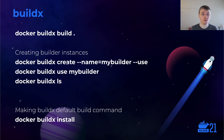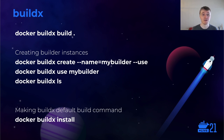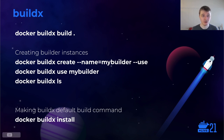To set that up, you run the command docker buildx create and optionally set your builder name. You can use --use to start using this builder, and then after you run that, you have your new builder running inside a container. You can then run docker buildx build and it will work exactly like your old docker build command. If you don't want to use the buildx subcommand, you can run docker buildx install, and it will replace the docker build command with the buildx build command.